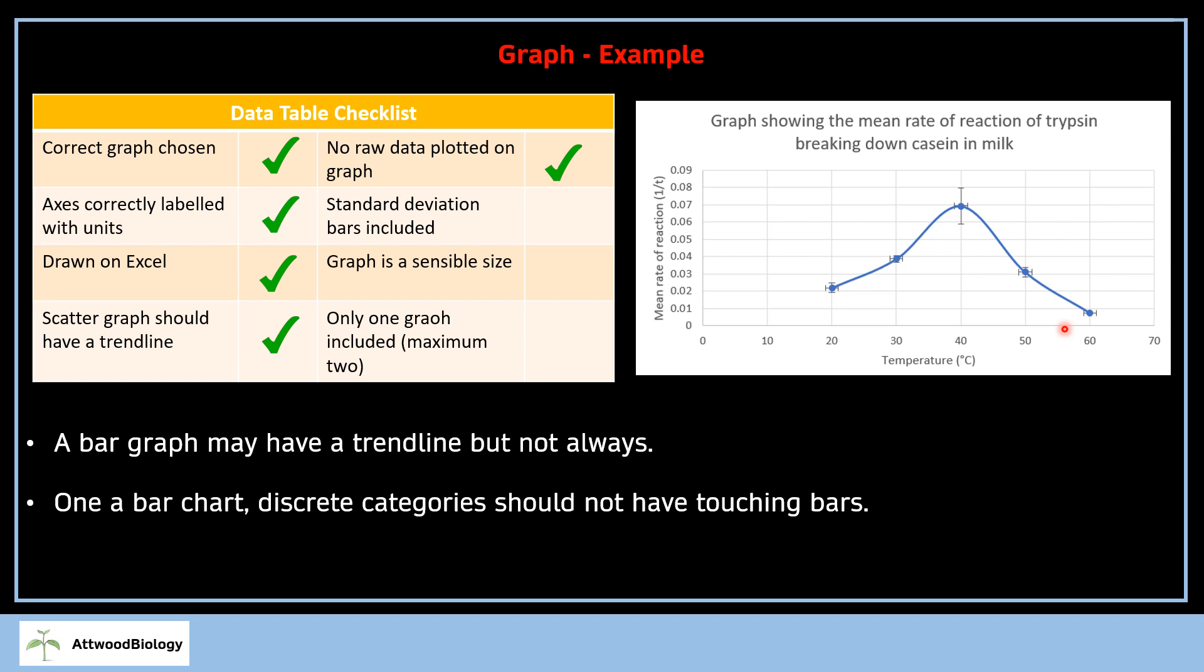One graph for each trial or raw data on there, or one graph with 10 trend lines in different dashes and colors—it's difficult to read. You do not put raw data on a graph because that won't enable you to see trends as well as plotting means. You can see I've got standard deviation bars included. You can do that on Excel—if you don't know how, watch a video closely. It's quite straightforward. The graph needs to be a sensible size. That's not as much of an issue now because you can have as many pages as you want, whereas previously there were only 12 pages.